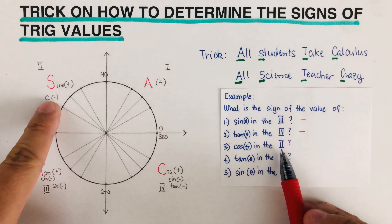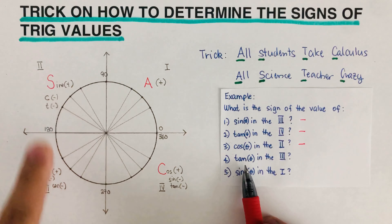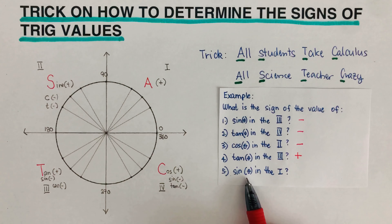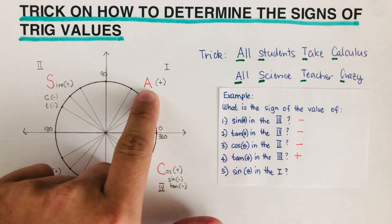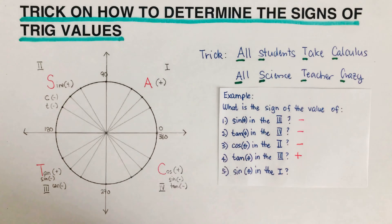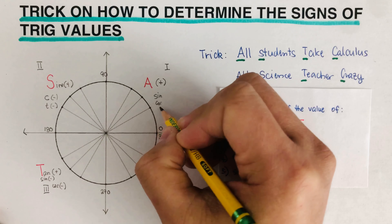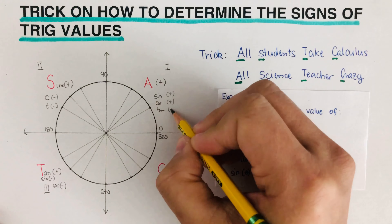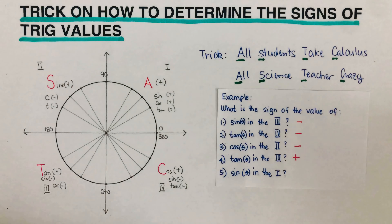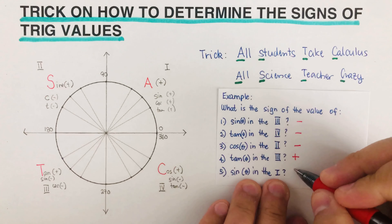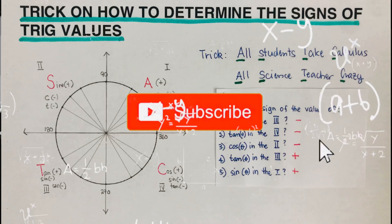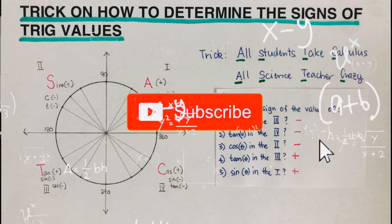Let's go over the answers. Cosine theta in the second quadrant is negative. Tangent in the third quadrant is positive. Sine theta in the first quadrant is positive — in the first quadrant, sine, cosine, and tangent are all positive. If you got the same answers, great! If you found this video helpful, hit like and subscribe for more math videos.